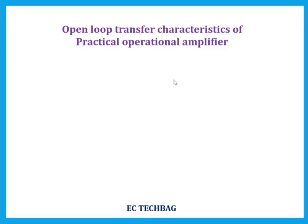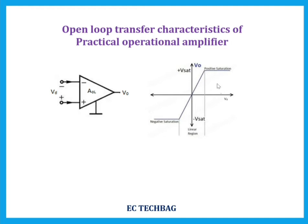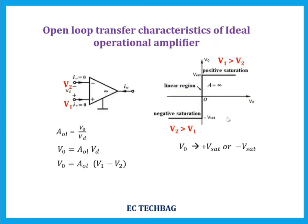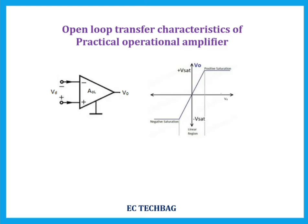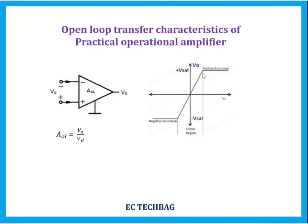In a practical operational amplifier, there is a linear region. In the ideal case there is no linear region because of infinite gain — Vd is almost zero, so the characteristic jumps directly to plus or minus V-saturation at Vd equal to zero. But in a practical operational amplifier, the gain is not infinite but a high finite value, so there is a linear region present.